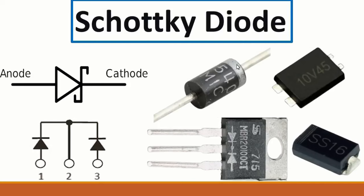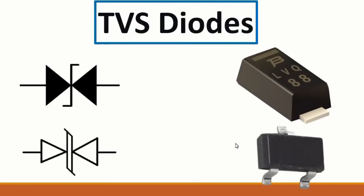The Schottky diode is used at the output stage for output voltage in switch mode power supplies. You should never replace a normal diode with a Schottky diode, because this is a very fast diode and not the same as a normal diode used in a bridge rectifier.